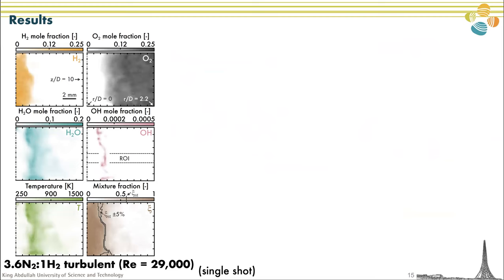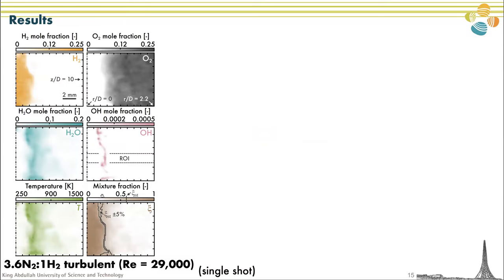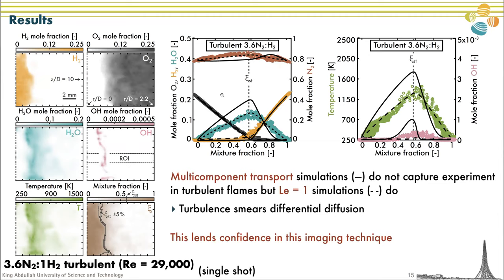The target is not laminar flames but turbulent flames, and I am showing very similar results for a turbulent flame with a much larger Reynolds number. One would again recognize expected features from a diffusion flame, but now the flame is corrugated. Choosing a region of interest and casting the data into mixture fraction space, we observe something very different: agreement is poor compared to multi-component transport simulations, but very good compared to unity Lewis number simulations. This is somewhat unexpected because turbulence is known to smear differential diffusion. The point is to show that these experiments are able to highlight the subtle influence of differential diffusion in a single shot, giving a lot of confidence in this new imaging technique.